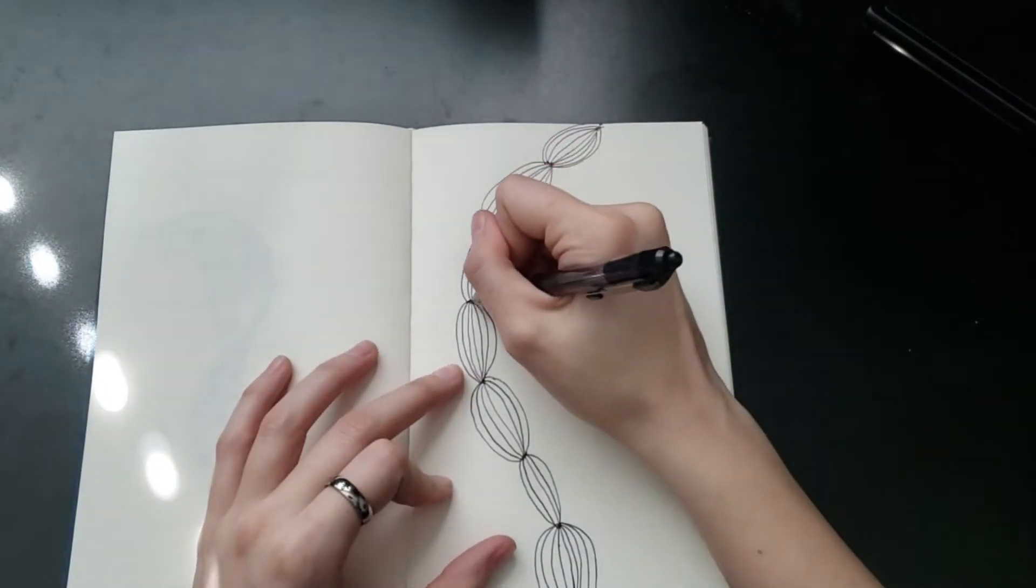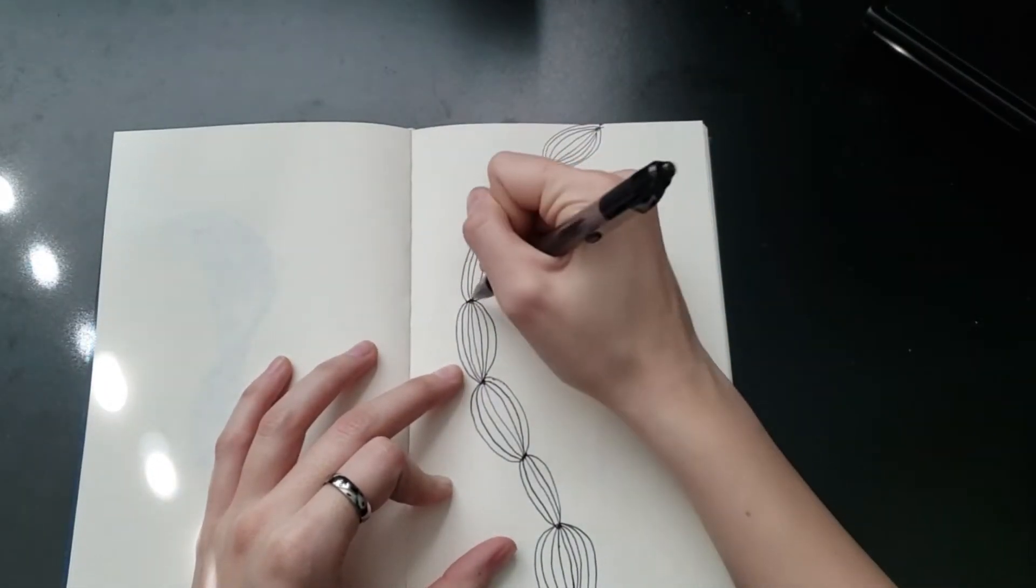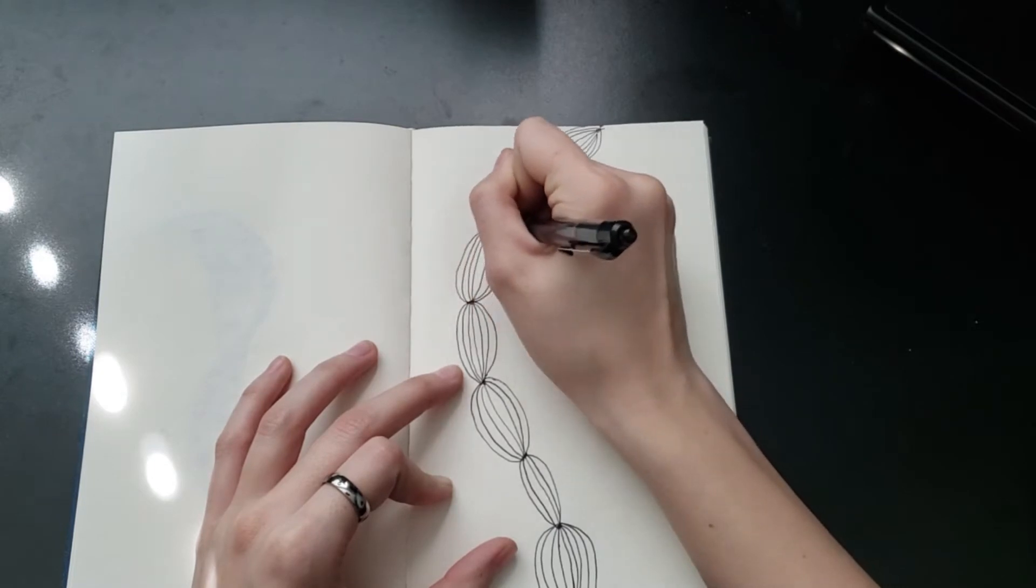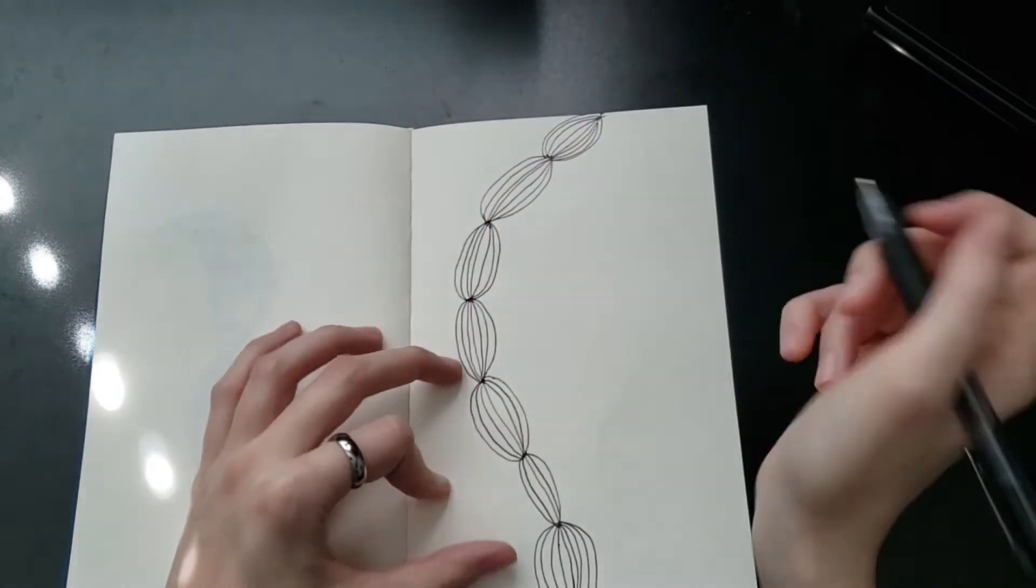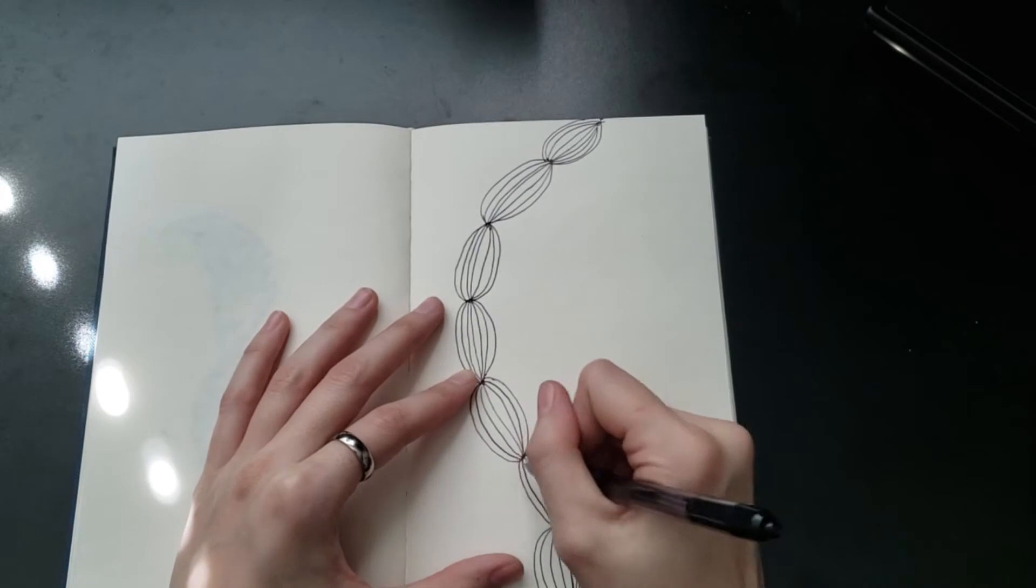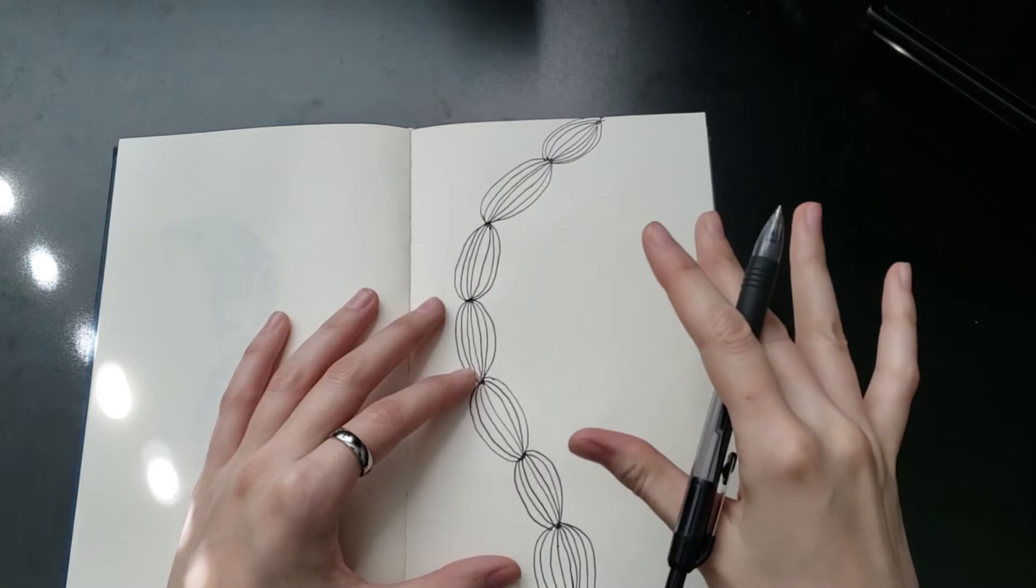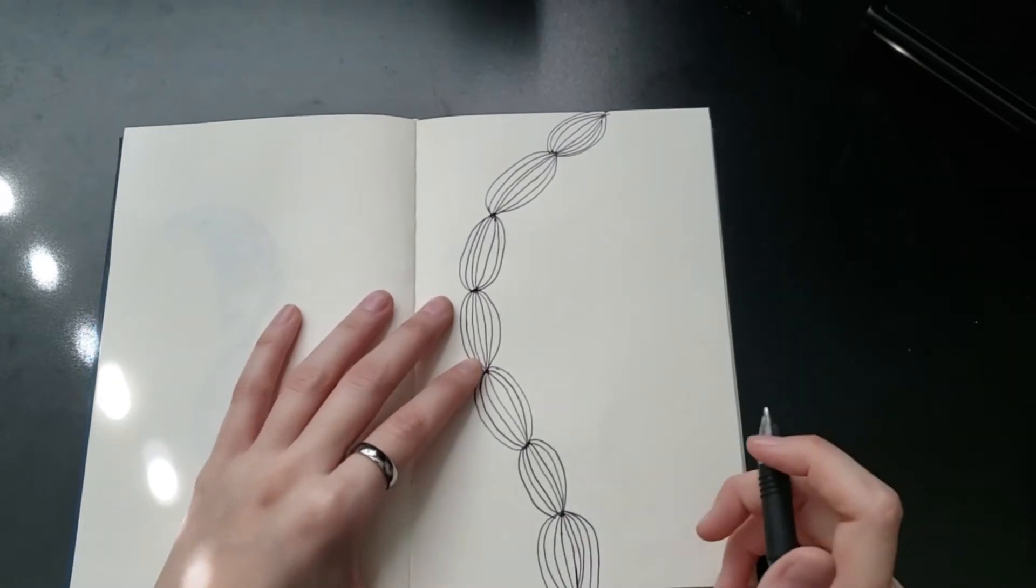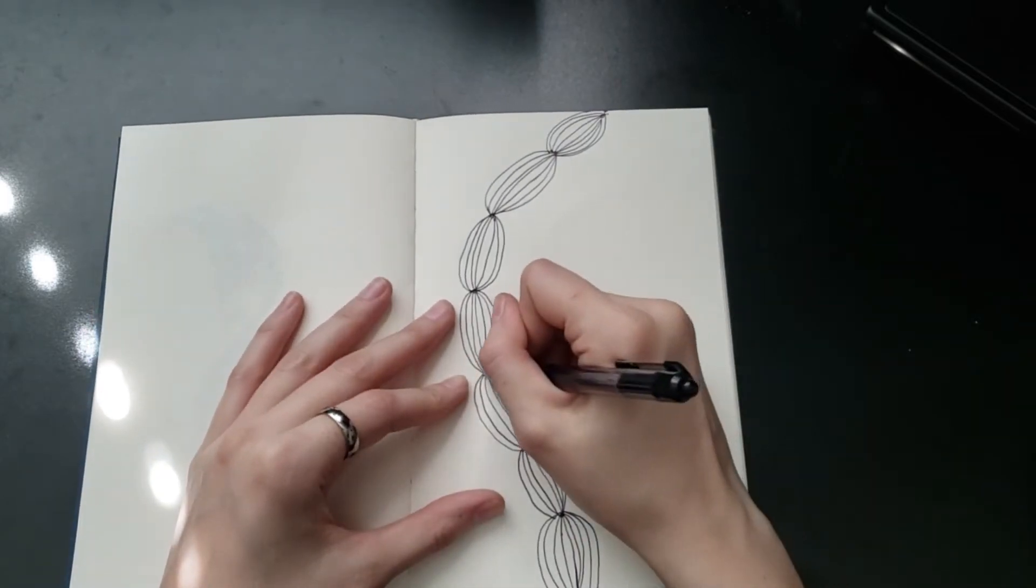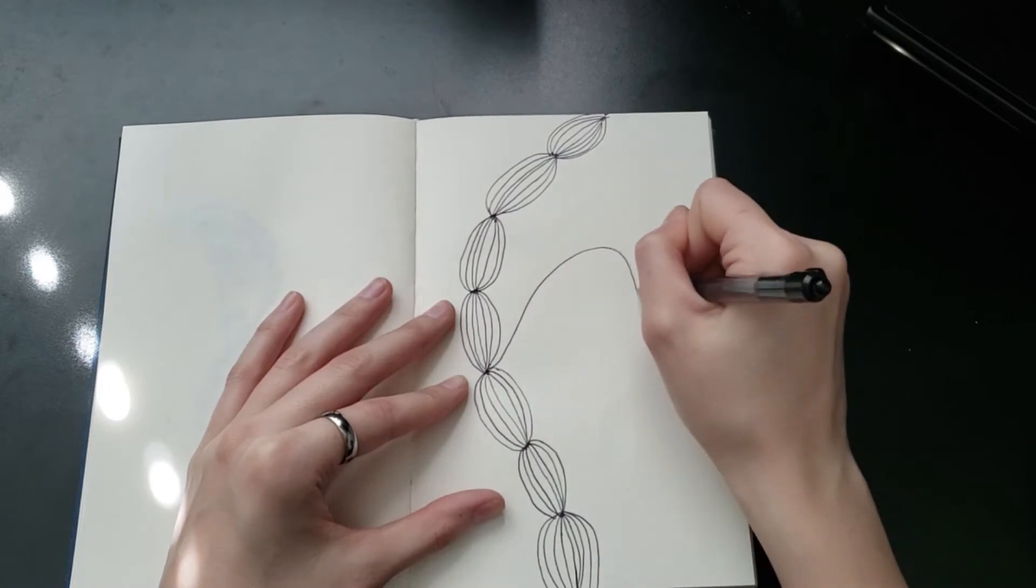Once you've got a few of these, the video said that you can go ahead and add more lines going out and do the same thing. You just keep repeating this process until you've got the whole page covered, so I'm gonna fast forward the video so you guys can see that working.